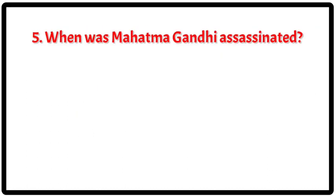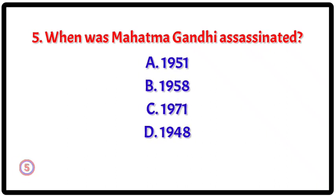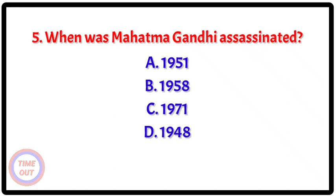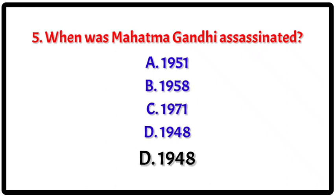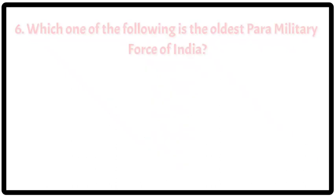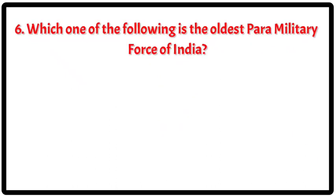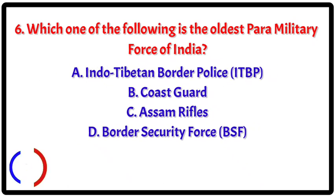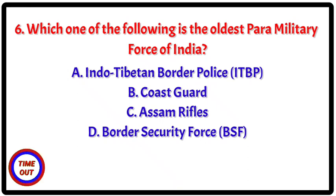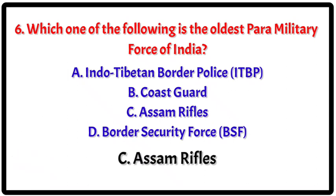Question 5: When was Mahatma Gandhi assassinated? Your options. The correct answer is D — 1948. Question 6: Which one of the following is the oldest paramilitary force of India? Your options. The correct answer is C — Assam Rifles.